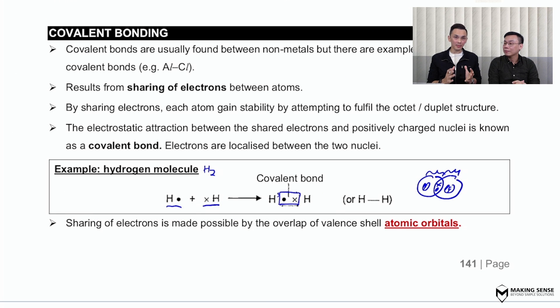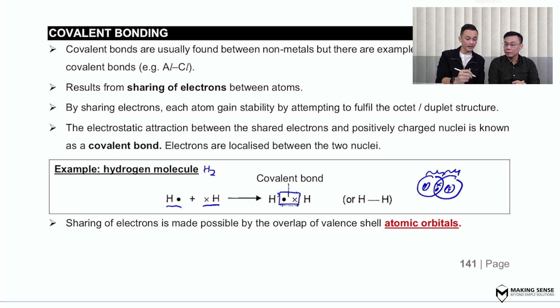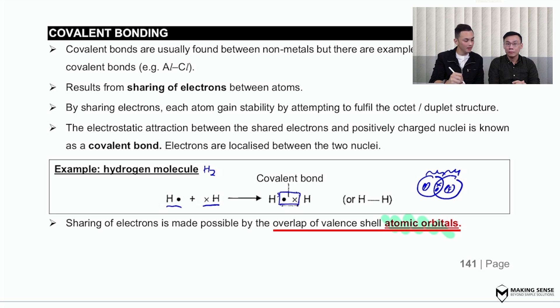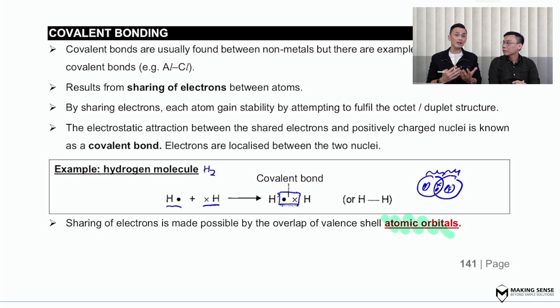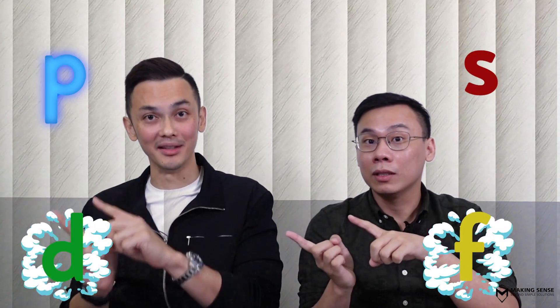So Mr. Yap, the covalent bond involves the sharing of electrons, but there's something new: the sharing of electrons is made possible by the overlap of atomic orbitals. Atomic orbitals is something they learn in the chapter called atomic structure, which means they have to revisit the shape of the orbitals. The shapes we have are the s orbital, the p orbital, the d orbital, and the f orbital.